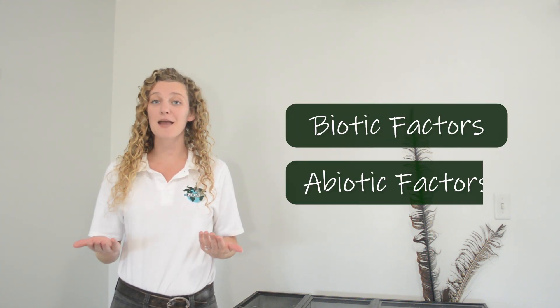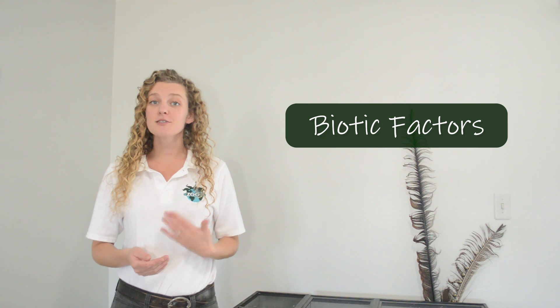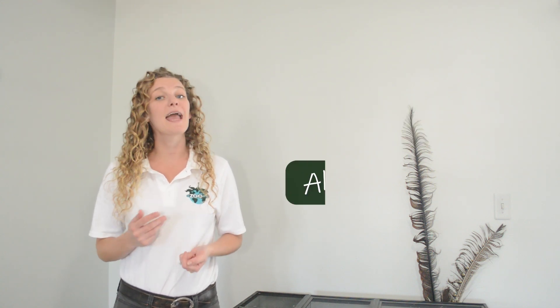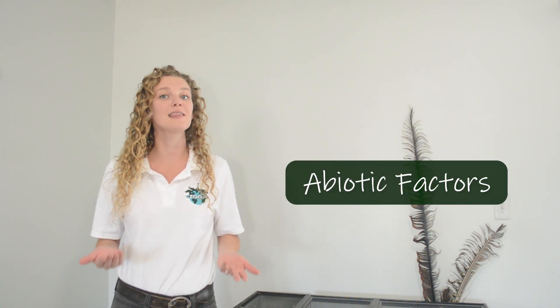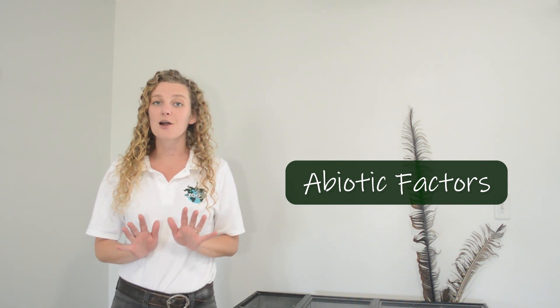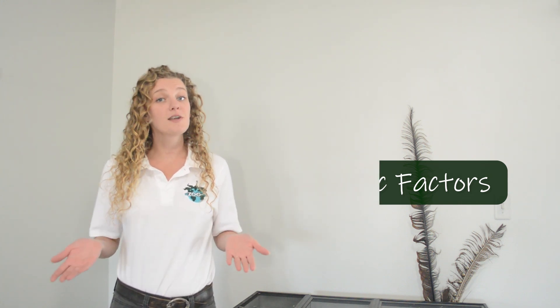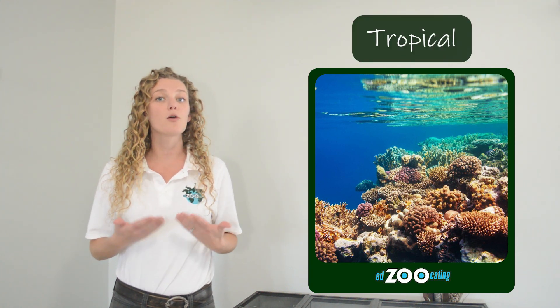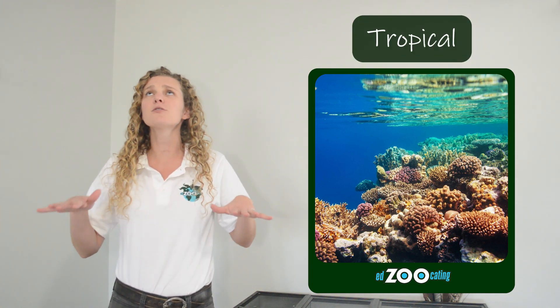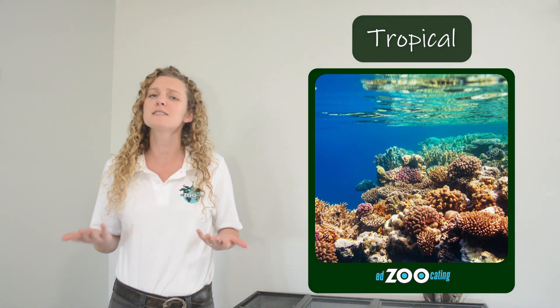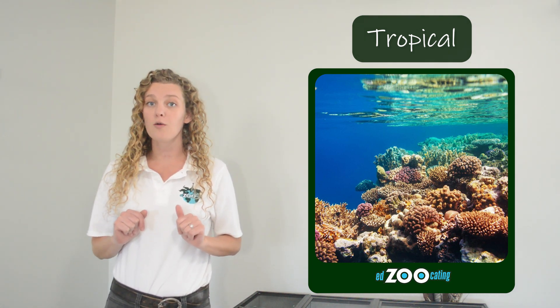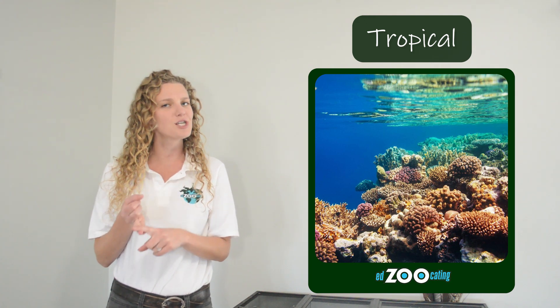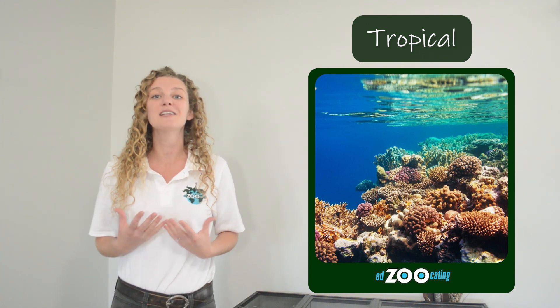Like all ecosystems, coral reefs have biotic and abiotic factors. Biotic factors are the living parts of the environment and abiotic factors are the non-living parts of the environment. Some of the non-living things we find in and around coral reefs include the water. Coral reefs are usually found in tropical places near the equator where it is warm and rainy, and the water is warm, shallow, and filled with bright sunshine during the daytime.